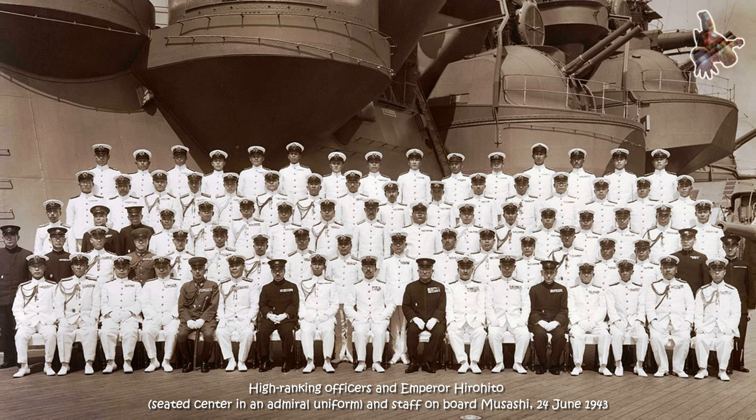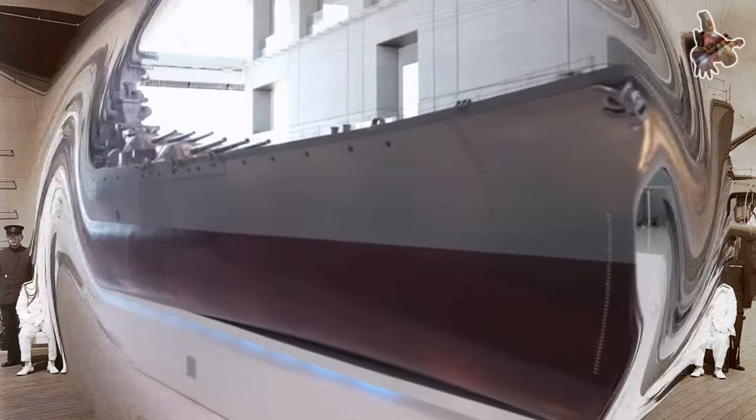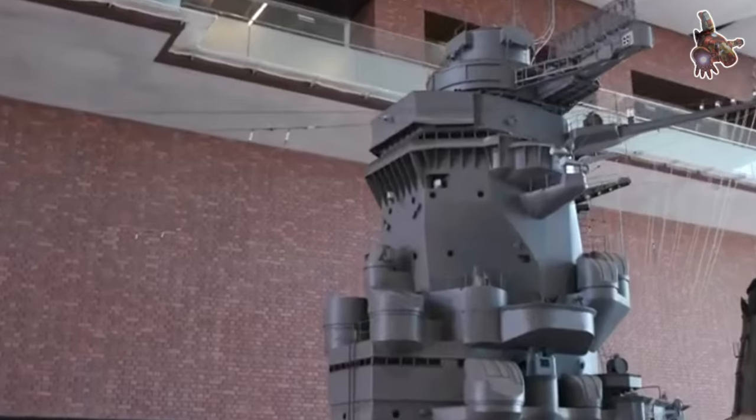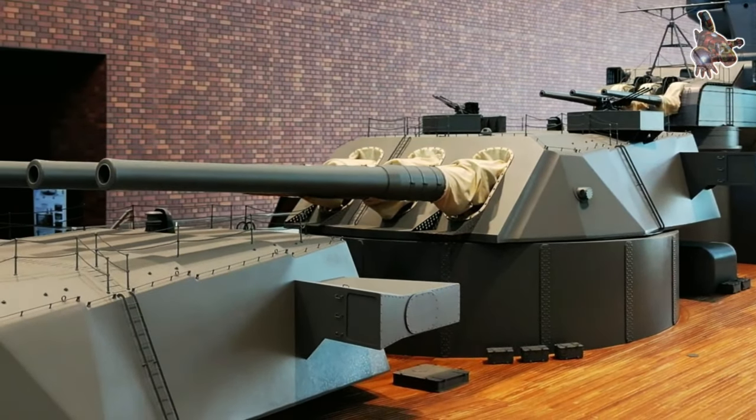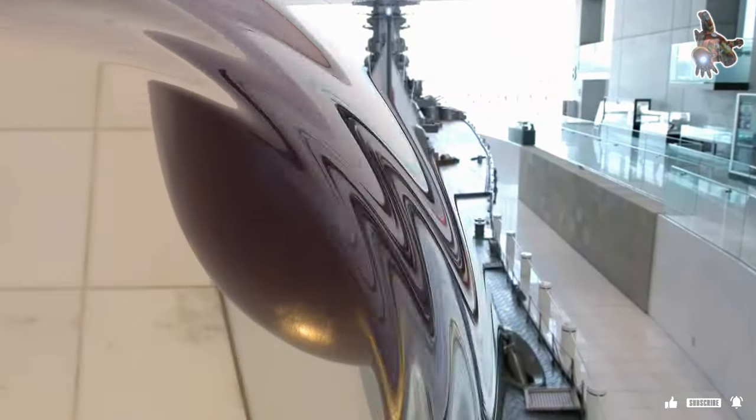Over her service, Yamato underwent several upgrades, notably in 1944, when her 155mm turrets were replaced by six twin 127mm anti-aircraft mounts, transforming her into a floating anti-aircraft stronghold.